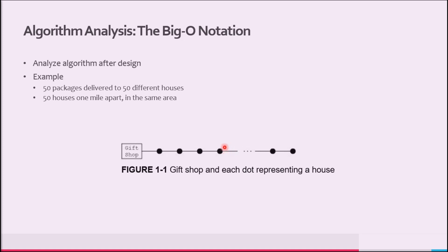Now let us consider the following problem. The holiday season is approaching, and a gift shop is expecting sales to be doubled or even tripled the regular amount. They have hired extra delivery people to deliver the packages on time. The company calculates the shortest distance from the shop to a particular destination and hands the route to the driver. Suppose that 50 packages are to be delivered to 50 different houses. The shop, while making the route, finds that the 50 houses are 1 mile apart and are in the same area.